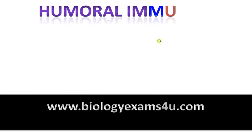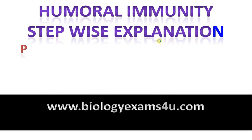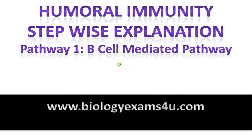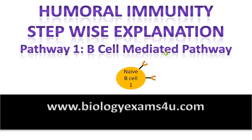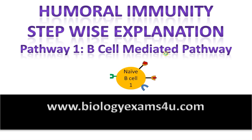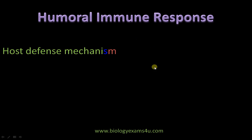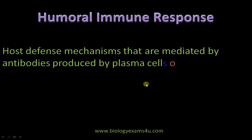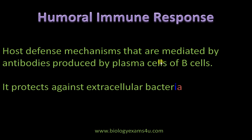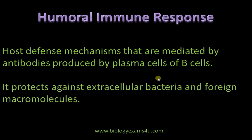Welcome to biology exams4a.com. Today the topic of our discussion is humoral immunity — a stepwise explanation of pathway one: the B cell mediated pathway that is independent of T helper cells. The humoral immune response is a host defense mechanism mediated by antibodies produced by plasma cells of B cells in tissue fluids, lymph, etc. It protects against extracellular pathogens and foreign macromolecules.